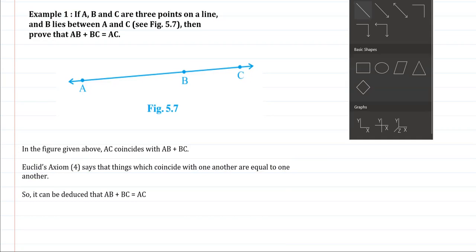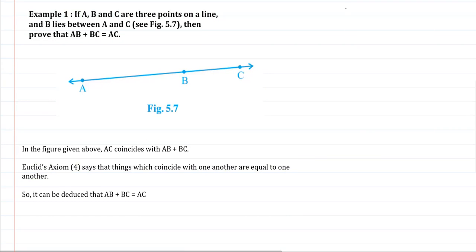What we need to understand here - let's say for example, if I measure AB here, this is the length of AB.